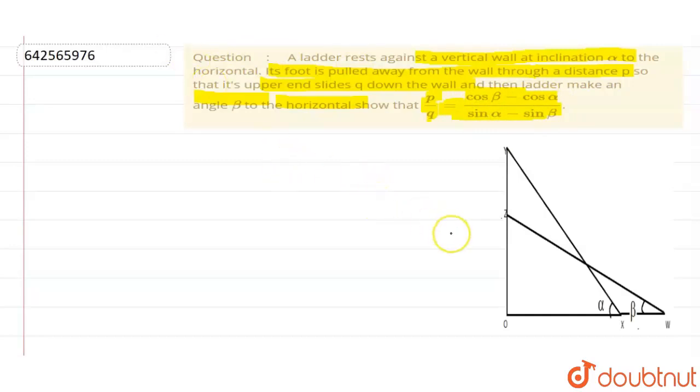In this question, XY and WZ are the same ladder. First, the ladder XY rests against a wall, but is pulled away from the wall by a distance p, and its upper end slides down the wall by making an angle beta. So let's start the solution. First, let XY equals WZ equals h, that means the height of the ladder.